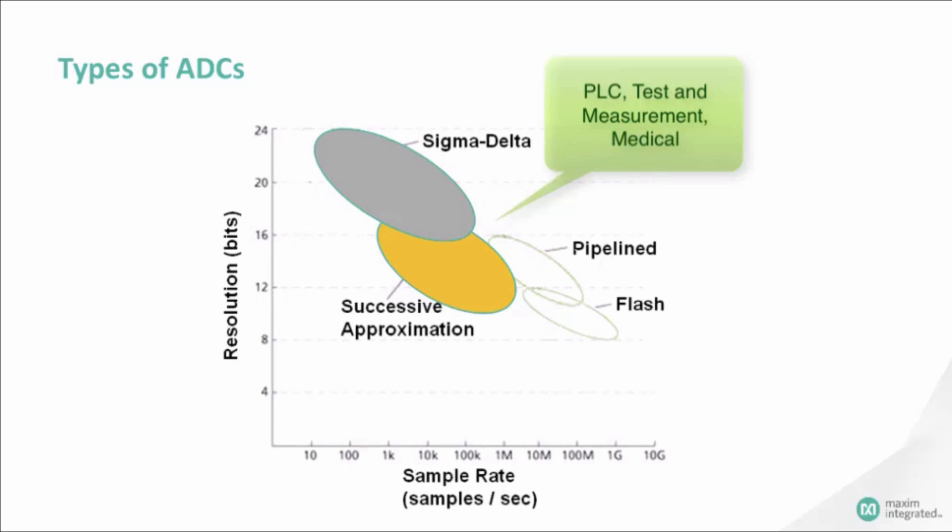Sigma-delta, or delta-sigma architecture, is intended for applications that require high resolution, but at low speeds, such as weighing scales, temperature sensors, and portable instrumentation.